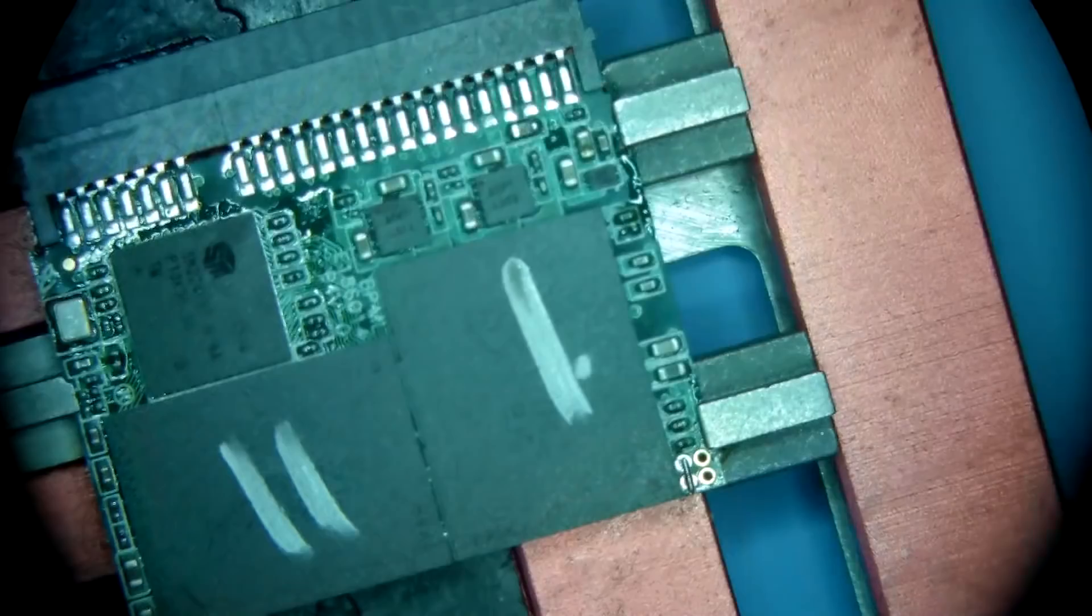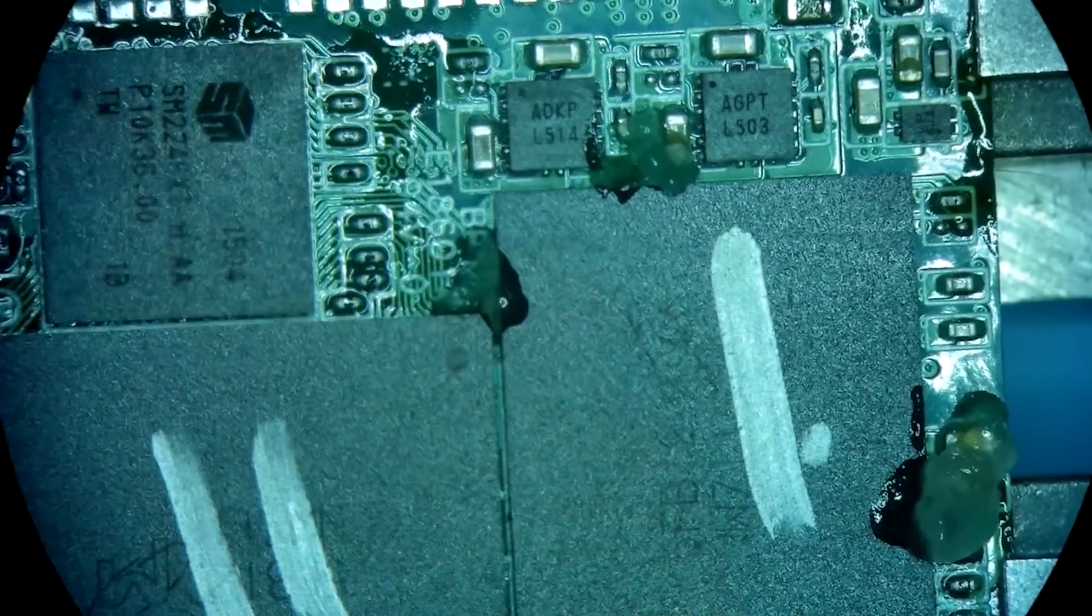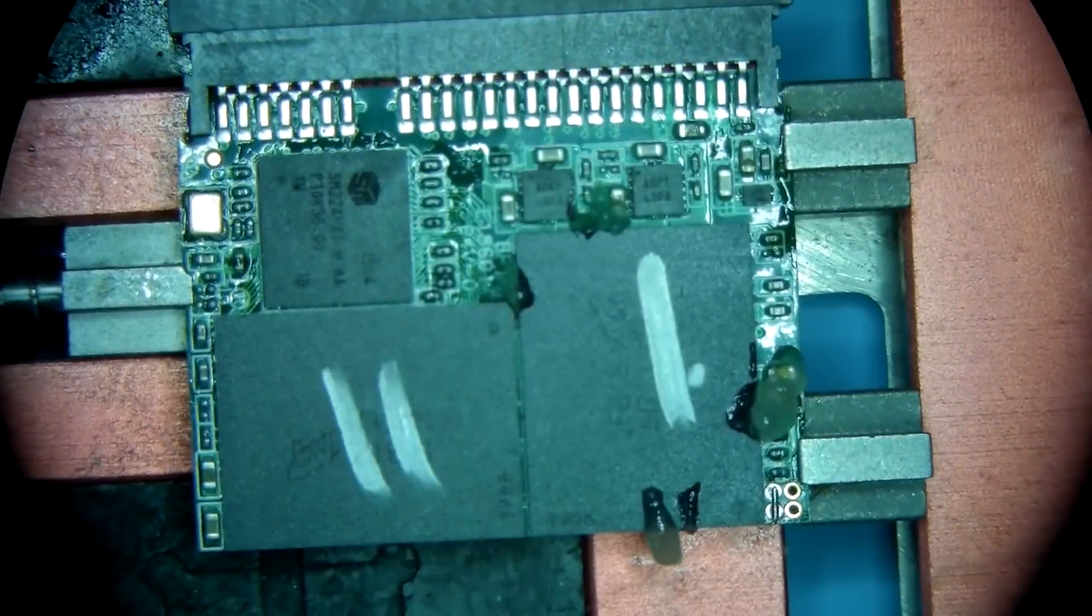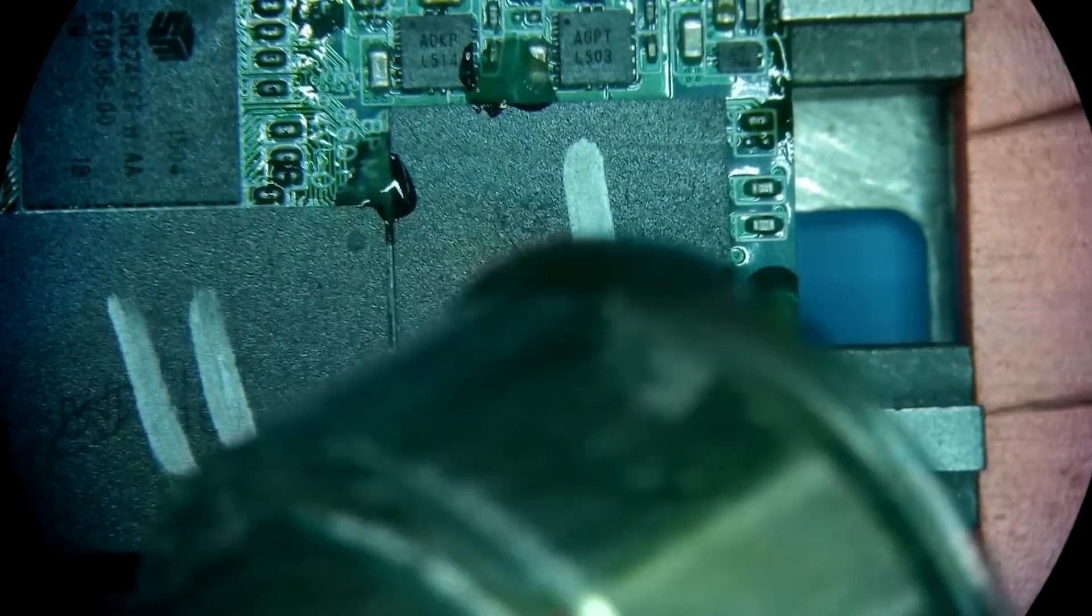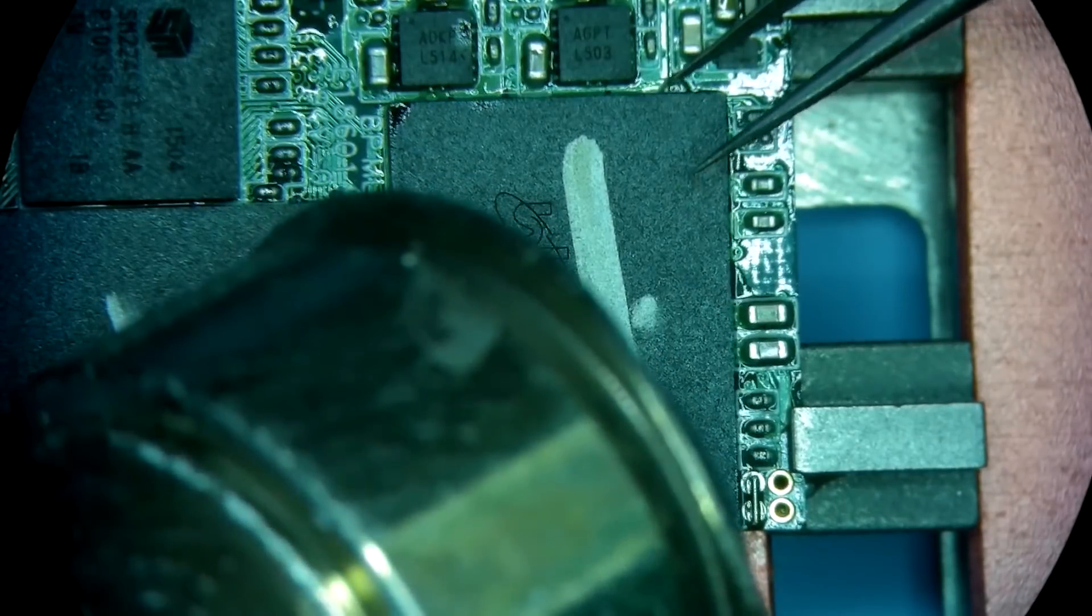So that didn't really change much. I'm going to be testing out why we're not getting safe mode. Is it a controller issue or is it a problem with NANDs? So removing one of the NANDs will by default throw the device into safe mode.